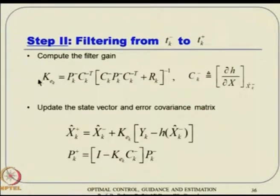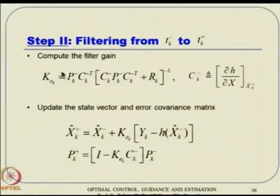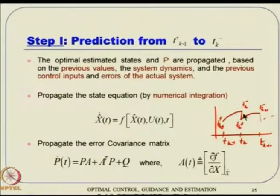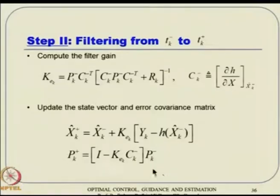To compute the filter gains, K_ek is computed from P_k- and C_k and related terms. Once you reach t_k-, it is time to update to t_k+. You compute K_ek using that full expression, then update the state x-hat_k+ and the error covariance matrix P_k+. The advantage is that EKF works for a wide variety of practical problems and is computationally very efficient.